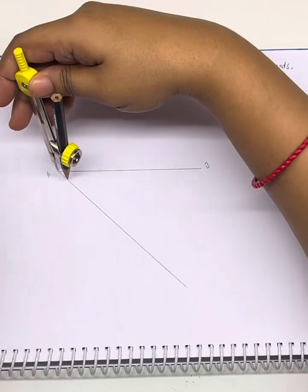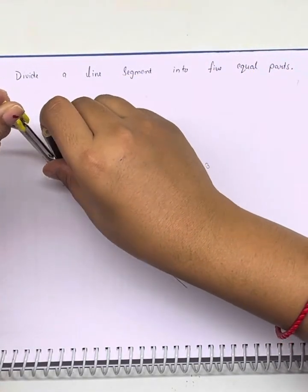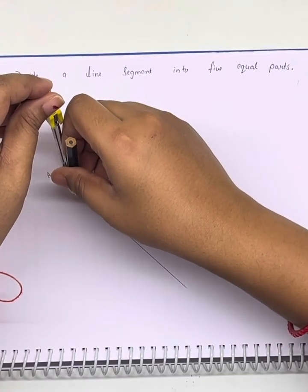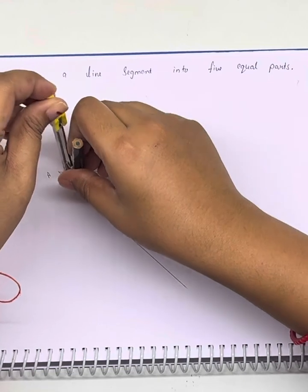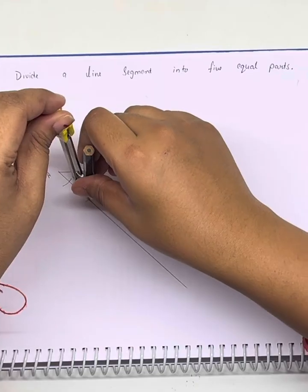Now we start putting marks considering it as a center, then first cut, second cut, third.